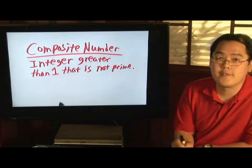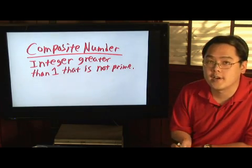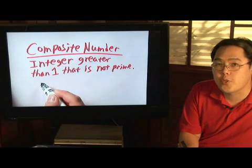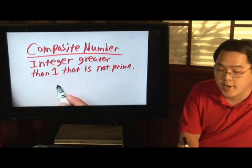Composite numbers involve more than one and itself as factors. So here's a couple of examples for you. We've already mentioned two and three are primes, so they wouldn't be composite numbers.